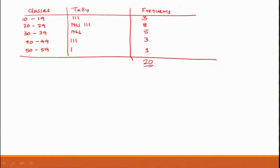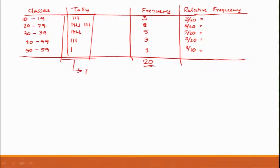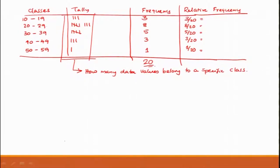The relative frequency can be calculated as 3/20, 8/20, 5/20, 3/20, and 1/20, giving individual relative frequencies. We normally use a histogram to plot this. In this process, we identify how many data values belong to a specific class — that is what the tally identifies. In this process you are losing individual data value information. Now assume that instead of a standard tally, we revise the diagram.